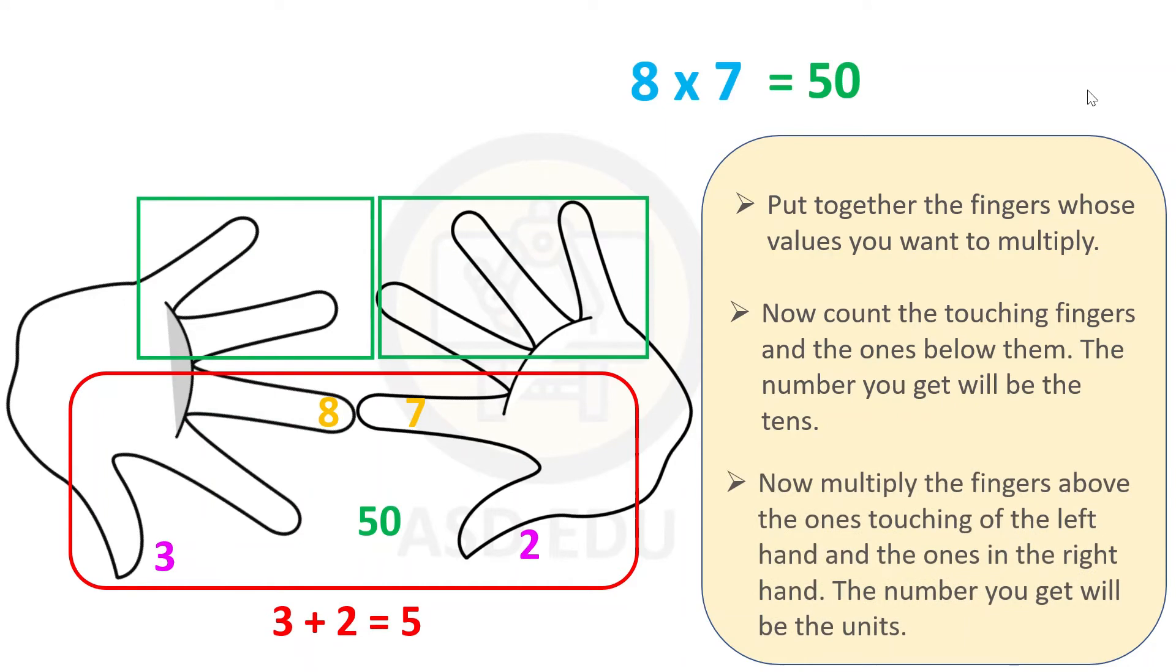Now multiply the fingers above the ones touching of the left hand and the ones in the right hand. The number you get will be the units. We have 2 fingers on the left hand and 3 fingers on the right hand. We multiply these 2 times 3 equals 6, so 8 times 7 equals 50 plus 6 equals 56.